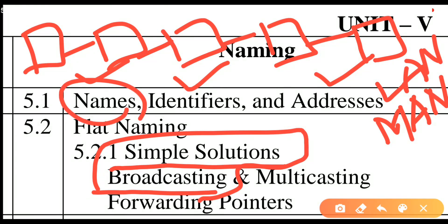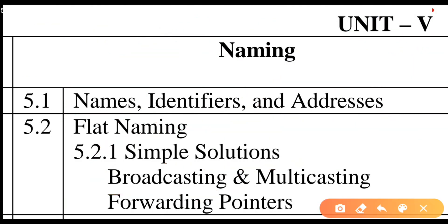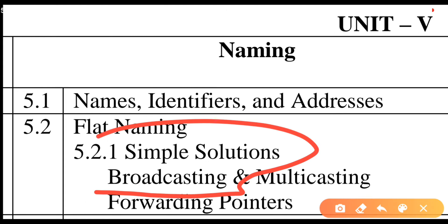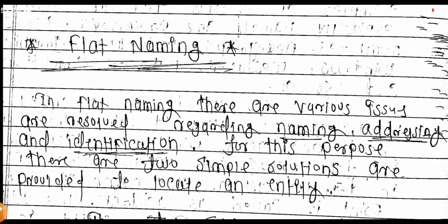What is the name of a system? How do we identify a system? What is the address of a system? Handling all these things is not a simple matter. So, the first type of solution is Simple Solutions Broadcasting — the simplest way to handle naming in such systems. And when the network grows very large, then multicasting, forwarding, and other techniques come into play.